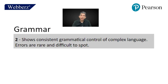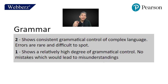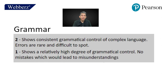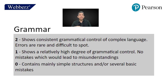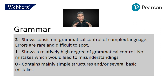For grammar, you get two if it is consistent in grammar. You get one if there are a few mistakes that lead to some misunderstanding. You get zero if there are huge grammatical errors or many mistakes.